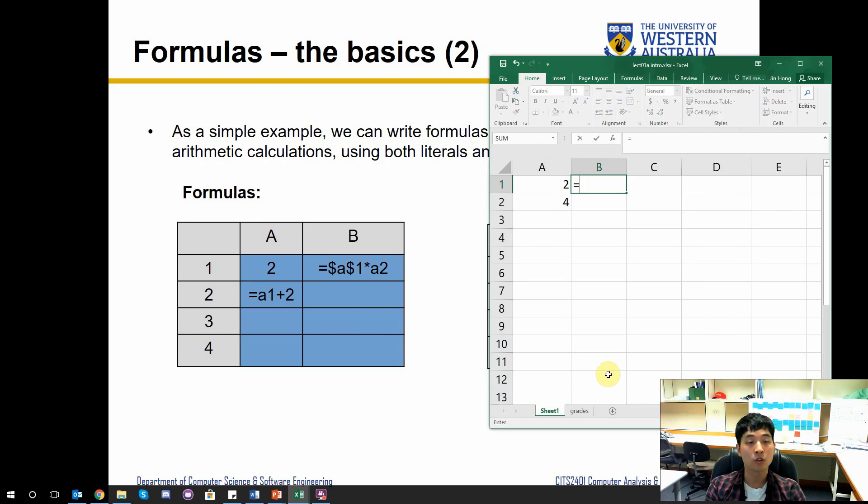And in adjacent to A1, in B1 we're going to have another formula: equals dollar sign A dollar sign 1 times A2. If I didn't have the value in A2 then it's going to automatically interpret it as zero. Yes, so if a cell is empty and requiring a value from another formula then it's going to be interpreted as zero. As you know from the previous video, dollar sign means absolute referencing.